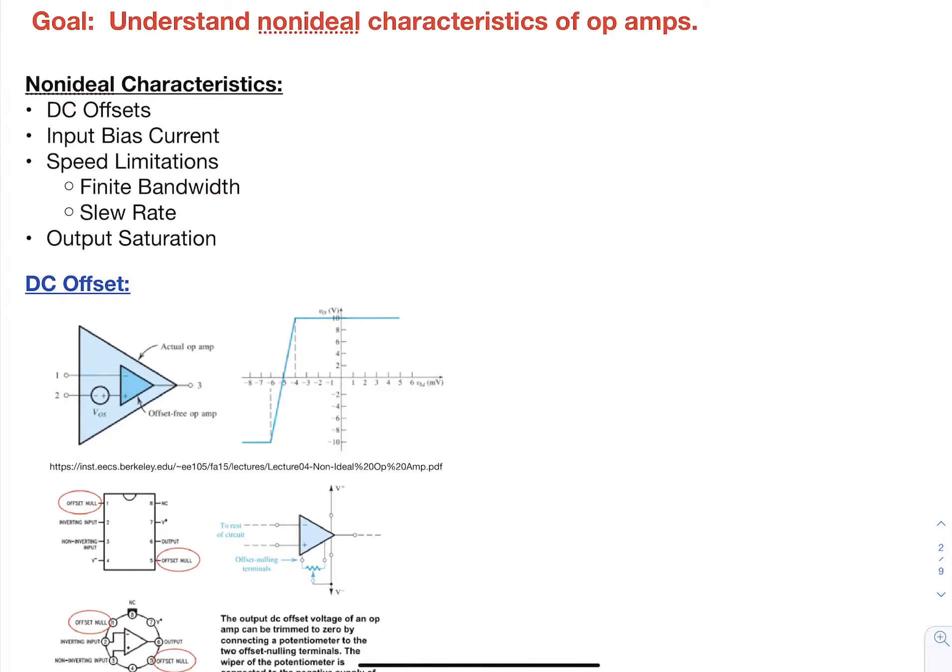So the non-ideal characteristics that I'm going to go over are the DC offsets, input bias current, speed limitations, and output saturation.